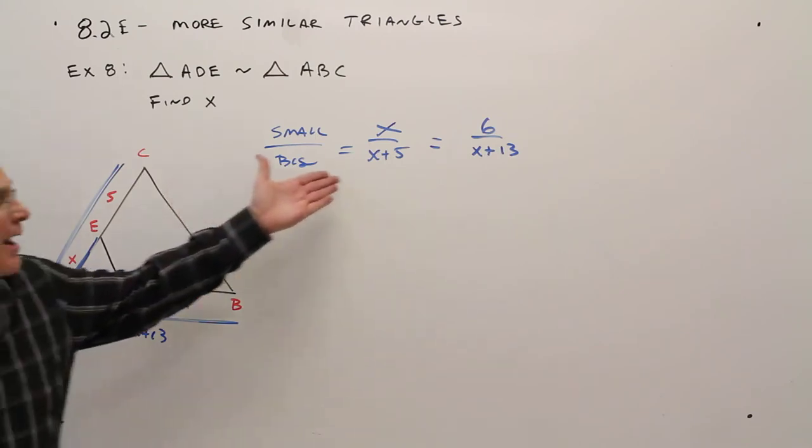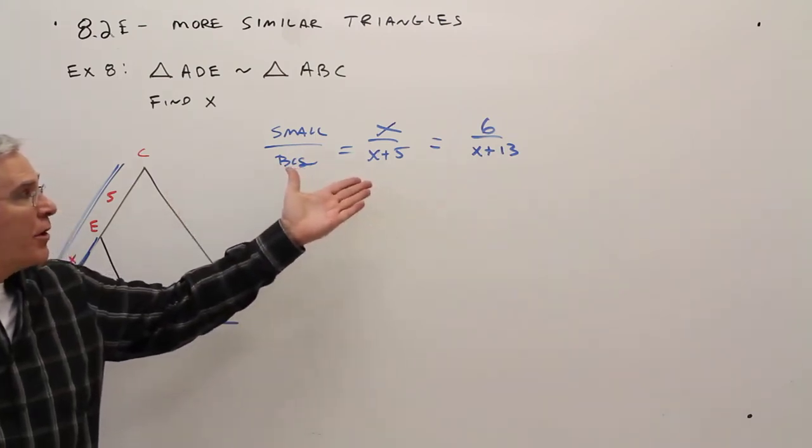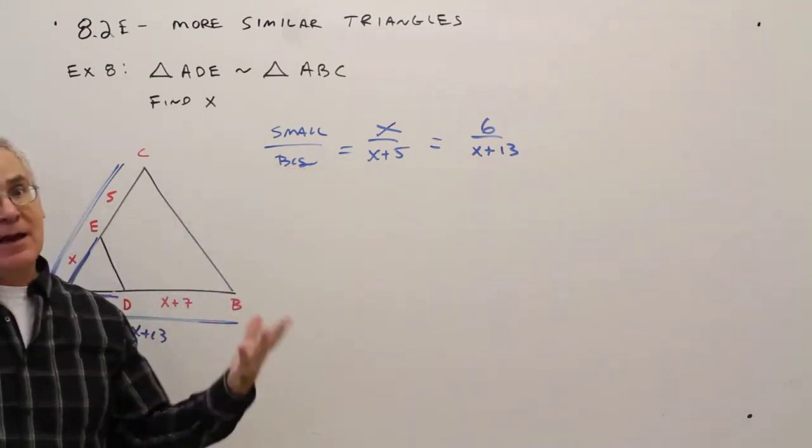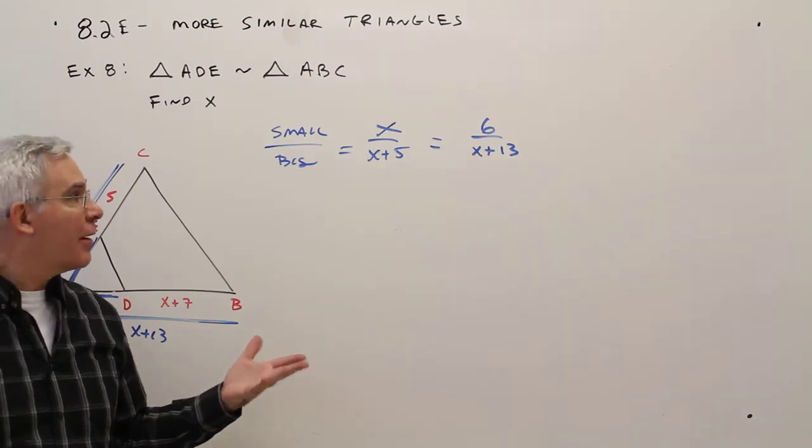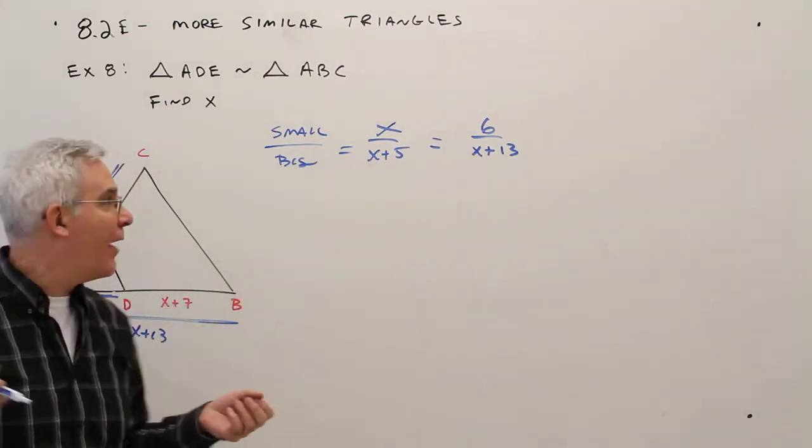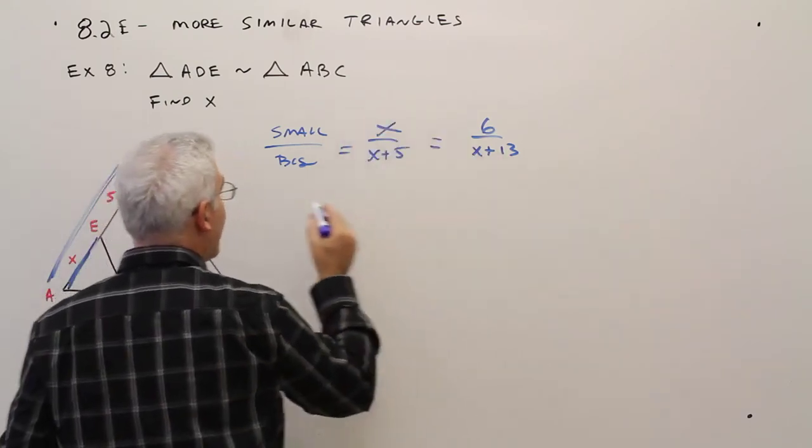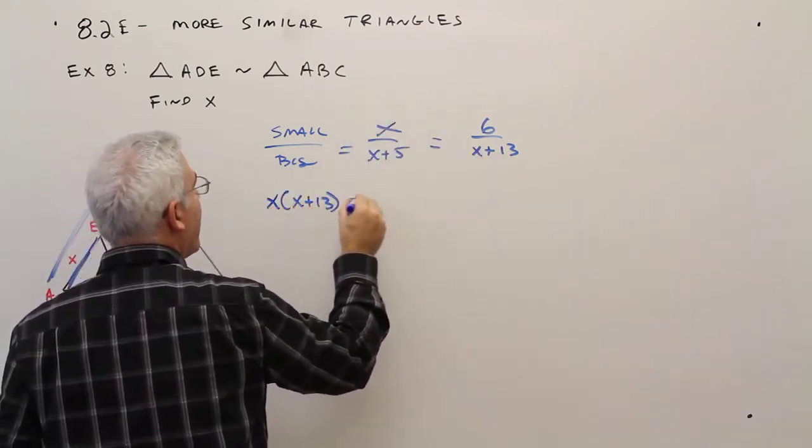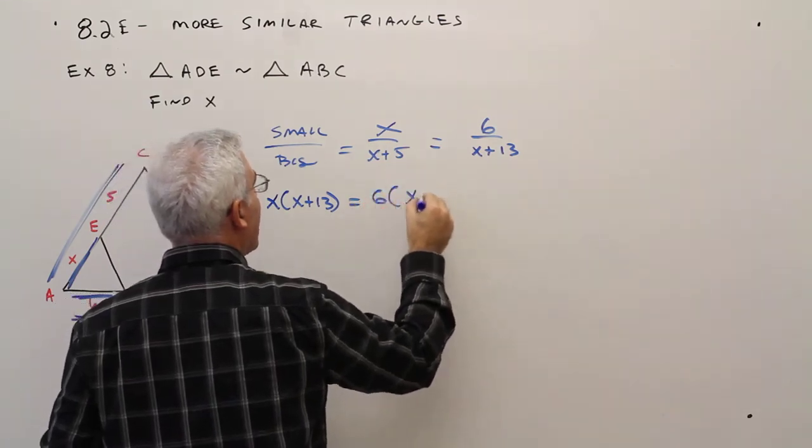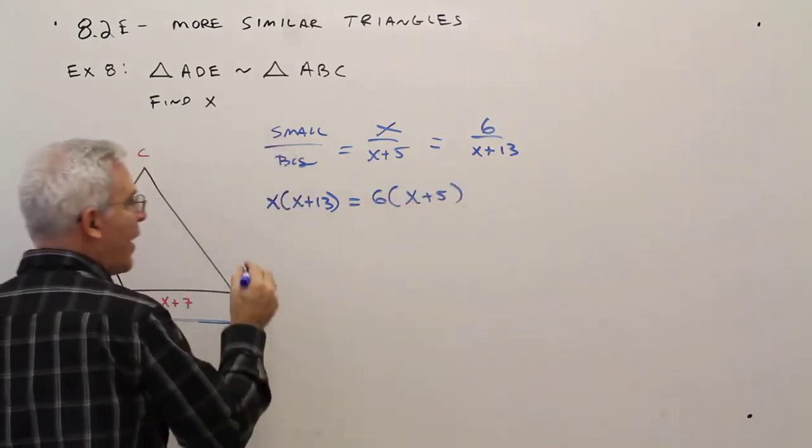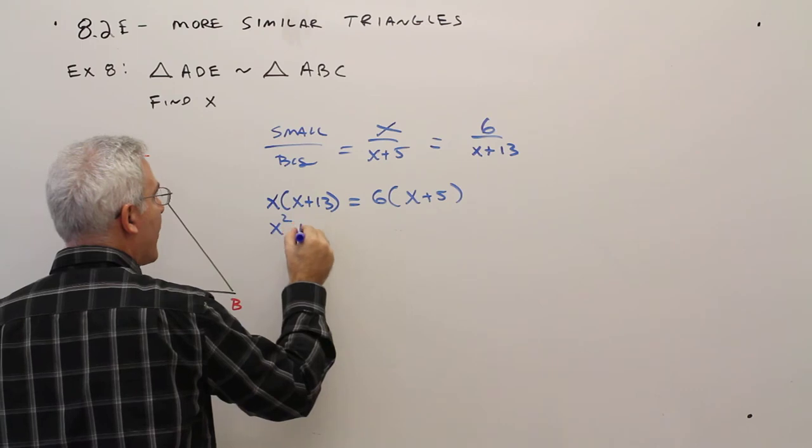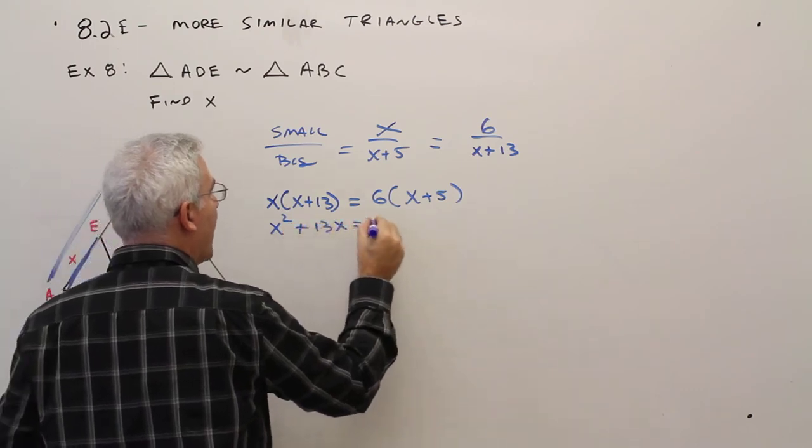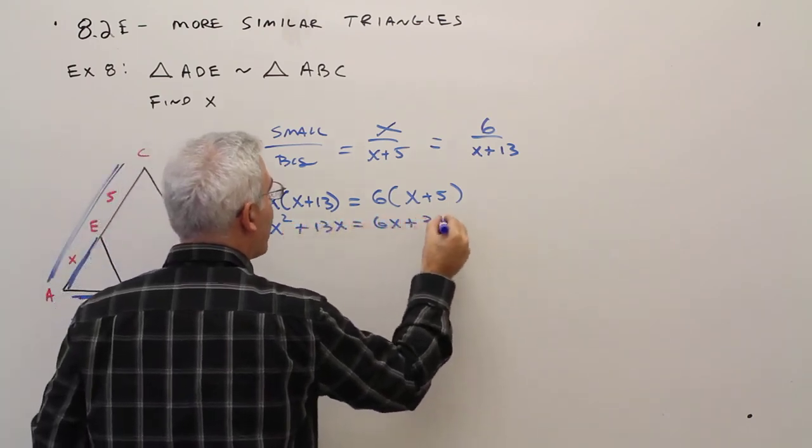Alright I now have a proportion in one variable. I can solve it by cross-multiplying. I will get a quadratic factoring solving like that. So I'll just cross multiply. So X times X plus 13 equals 6 times X plus 5. X squared plus 13X equals 6X plus 30.